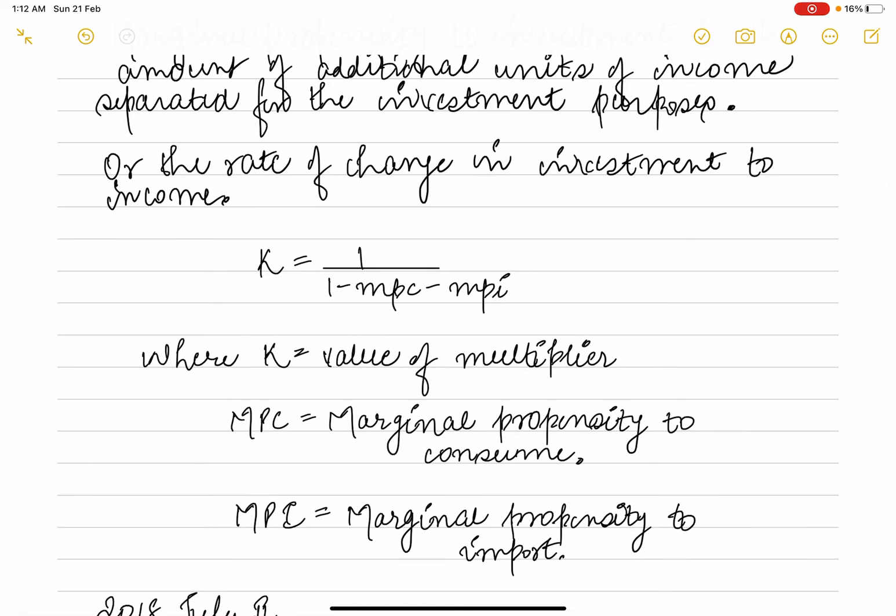To calculate K, we use the formula: K = 1/(1 - MPC - MPI), where MPC is the marginal propensity to consume, and we subtract MPI, which is marginal propensity to import. This gives us the value of K, the multiplier.